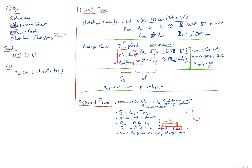Another way of thinking about it: apparent power is like the magnitude of power on the lines, no matter what direction it flows. Average power is just the power going from generator to load. The thing that connects apparent power with average power is power factor, which we abbreviate as PF.